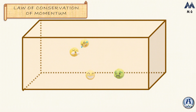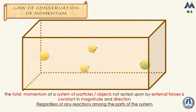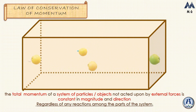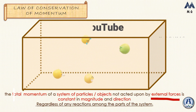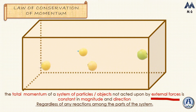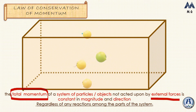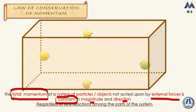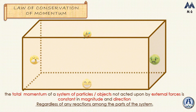The law of conservation of momentum predicts something very interesting about the motion of those particles. It says that the total momentum of a system of particles or objects — in this case, the box with the four particles — if that system is not acted upon by external forces such as gravity or friction, then the total momentum, and not the individual momentums, will always be constant in magnitude and direction, regardless of any reactions between parts of the system.